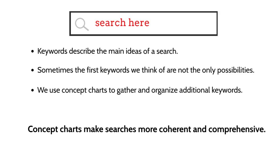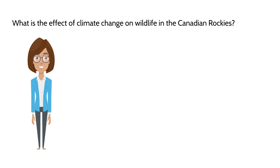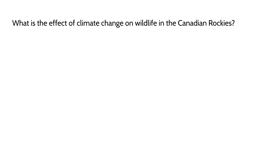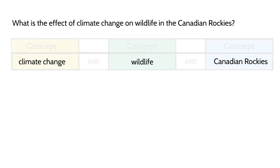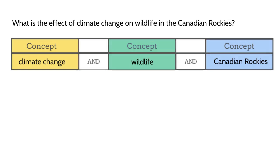Here's an example using a research question. Naya is taking an environmental science course. She has to write an essay based on the research question: What is the effect of climate change on wildlife in the Canadian Rockies? She notes there are three main keywords in this research question: climate change, wildlife, and Canadian Rockies. These words reflect the main concepts Naya will use in her search.